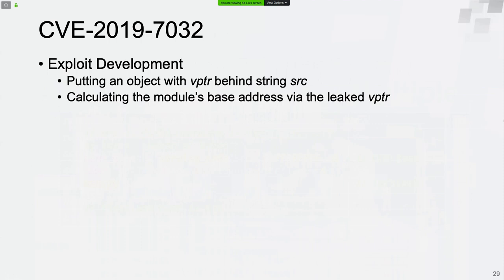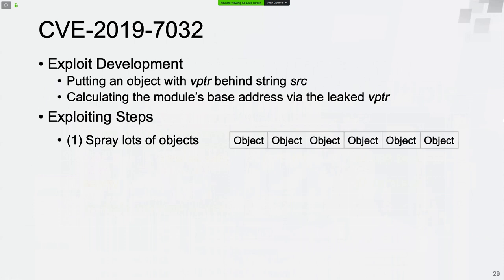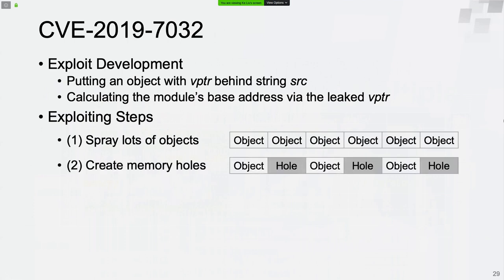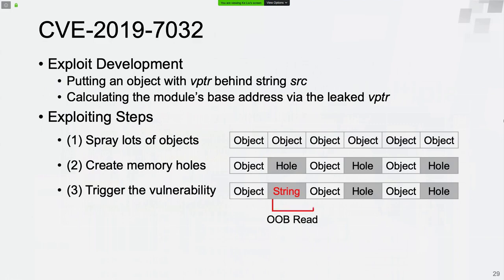The way to exploit the vulnerability is very straightforward. We can put an object with a virtual function table pointer behind the source stream, then read the pointer by triggering the vulnerability. The pointer will be used to calculate the base address of the module. The exploiting steps: first, spray lots of objects with a virtual function table pointer. Then free half of the sprayed objects to make memory holes. Finally, trigger the vulnerability to leak the virtual function table pointer of one of the sprayed objects.